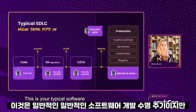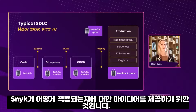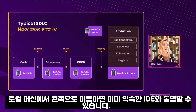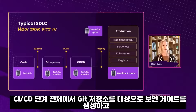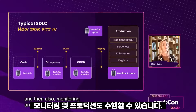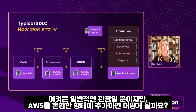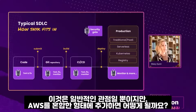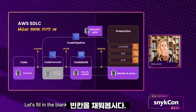This is your typical software development lifecycle — just to give you an idea of how Snyk fits in. We go as far left as your local machine. We're going to be integrating with those IDEs that you're already accustomed to using. We have coverage for your Git repositories throughout the CI/CD stage. You can even create a security gate and then also monitoring in production. But what if we add AWS into the mix? What does that look like? Let's fill in the blanks.